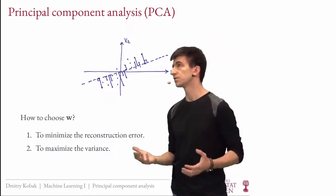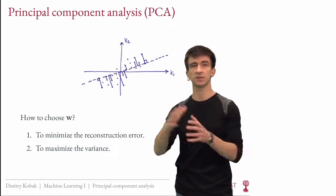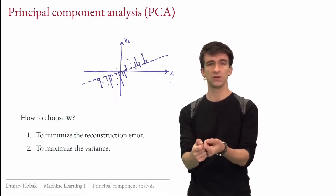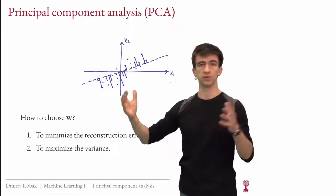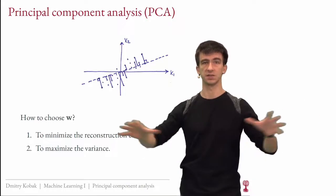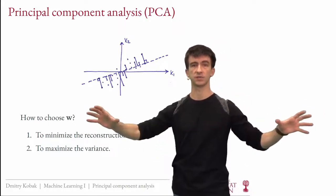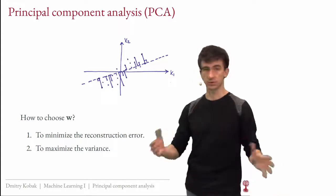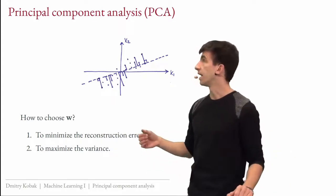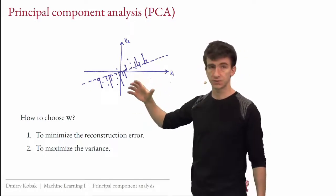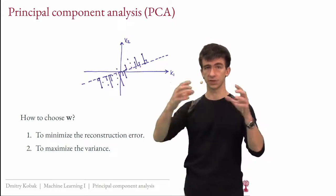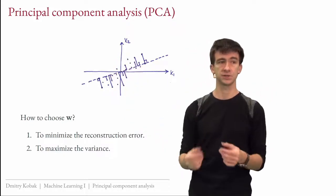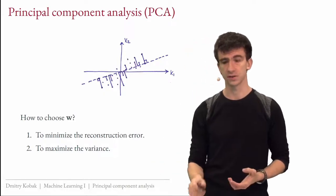Intuitively, if there was variation in your original raw data and after projection the variance is very small, you may have lost useful variation. You want a projection where the data is spread out, hoping that spread-out data means you're preserving some useful structure. That's not guaranteed, but that's the hope. This can be set up in any dimensions — you can have 10 original dimensions and still look for one axis. So projecting to one dimension, you either want to minimize reconstruction error or maximize variance of the projection.